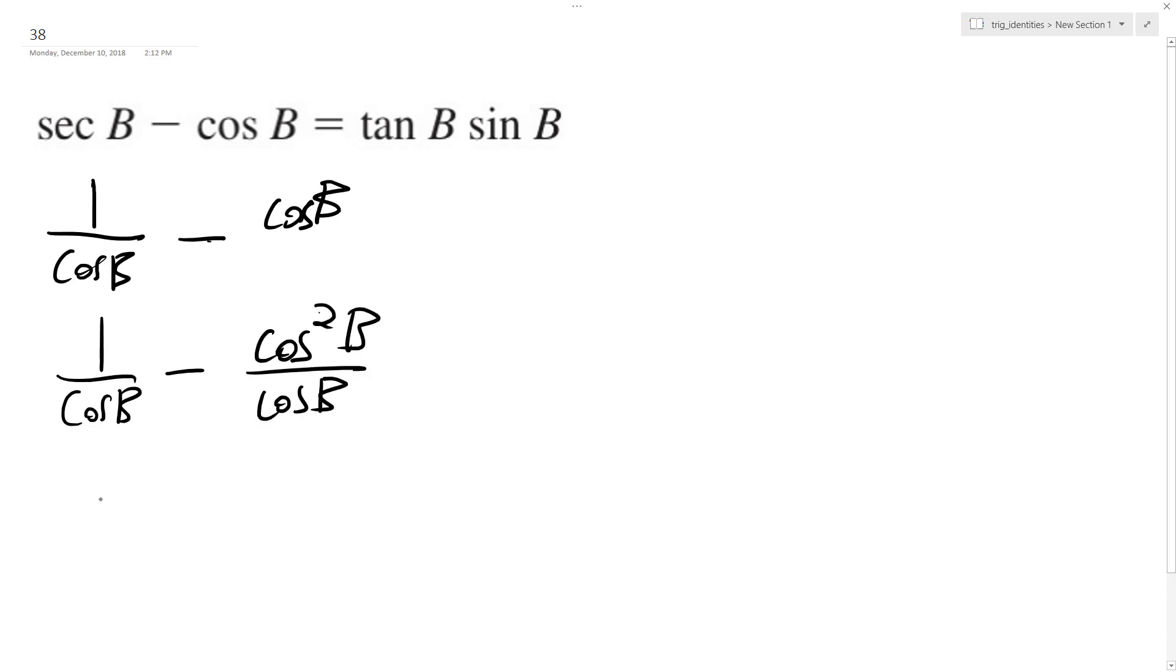Now I can combine these because they have the same common denominator. 1 minus cosine squared b over cosine b.